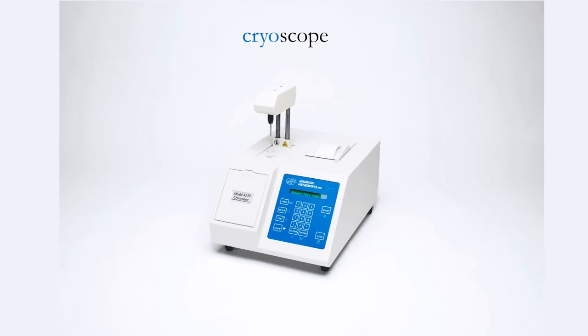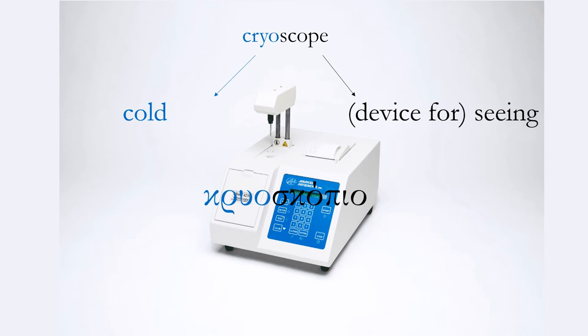A cryoscope: we already know what a scope is, what is cryo? It comes from the Greek word cryo, which means cold. So cryoscope is something that helps us determine the freezing point of liquids. Cryoscopio.